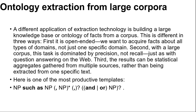The next topic is ontology extraction from large corpora. So far we have thought of information extraction as finding a specific set of relations — speaker, time, location — in a specific text such as a talk announcement. A different application of extraction technology is building a large knowledge base or ontology of facts from a corpus. This is different in three ways: first, it is open-ended, acquiring facts about all types of domains; second, with a large corpus, this task is dominated by precision; and third, the results can be statistical aggregations gathered from multiple sources rather than being extracted from one specific text.